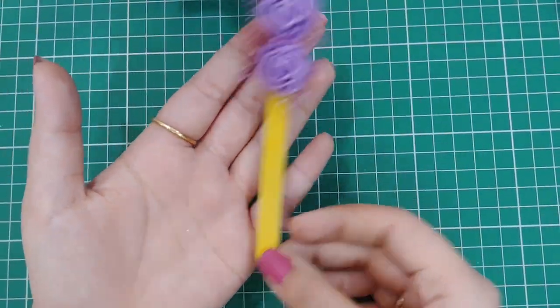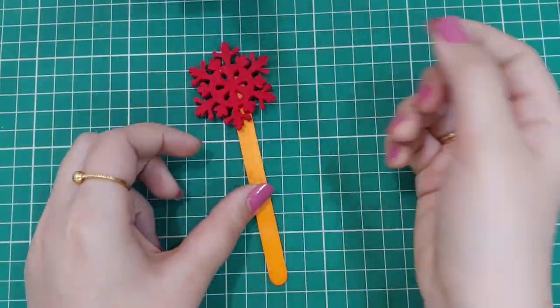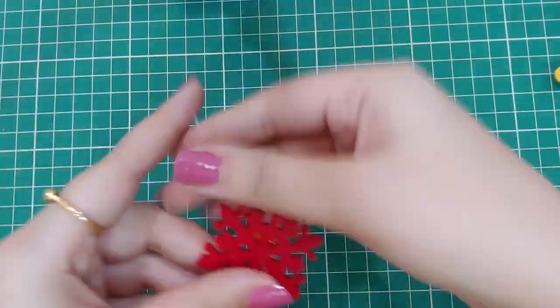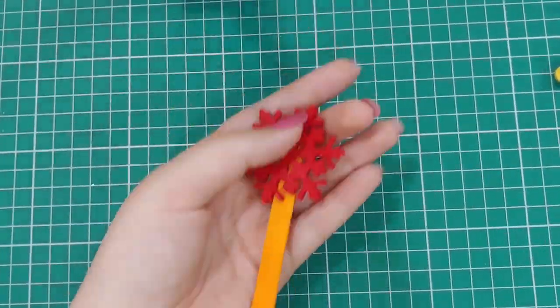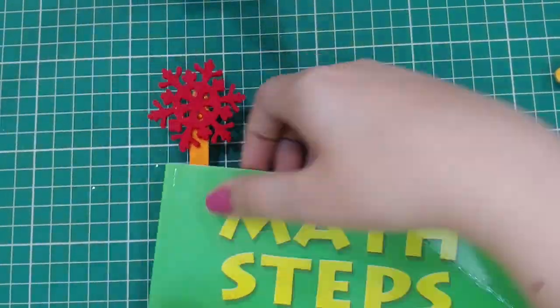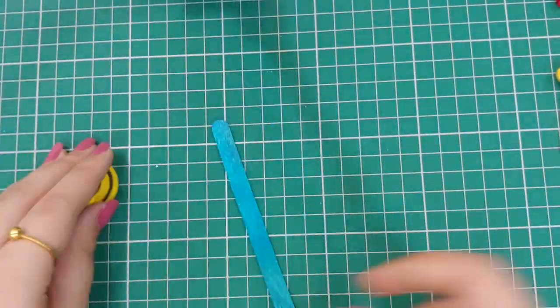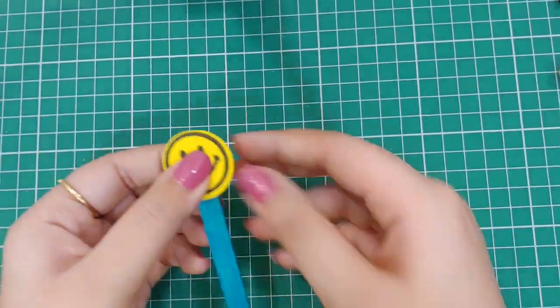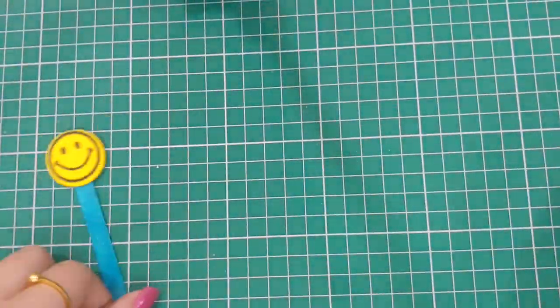Now next I am going to stick a foam sticker, this is a foam snowflake red colored, and again it's done. These look very pretty. If you don't have these colored ice cream sticks you can also use the normal white ice cream sticks and then paint them using fabric paints.